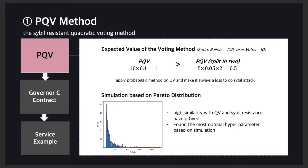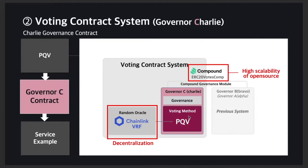Splitting voting power makes the expected value of voting power always lower than executing one voting power. This team also did a simulation based on the Pareto distribution. High similarity with quadratic voting and sybil-resistancy have been proved, and we also found the most optimal hyperparameter based on the simulation. Governor C, or Charlie, is a smart contract for a voting system based on PQV. We used Chainlink VRF to implement the probability factor of PQV.